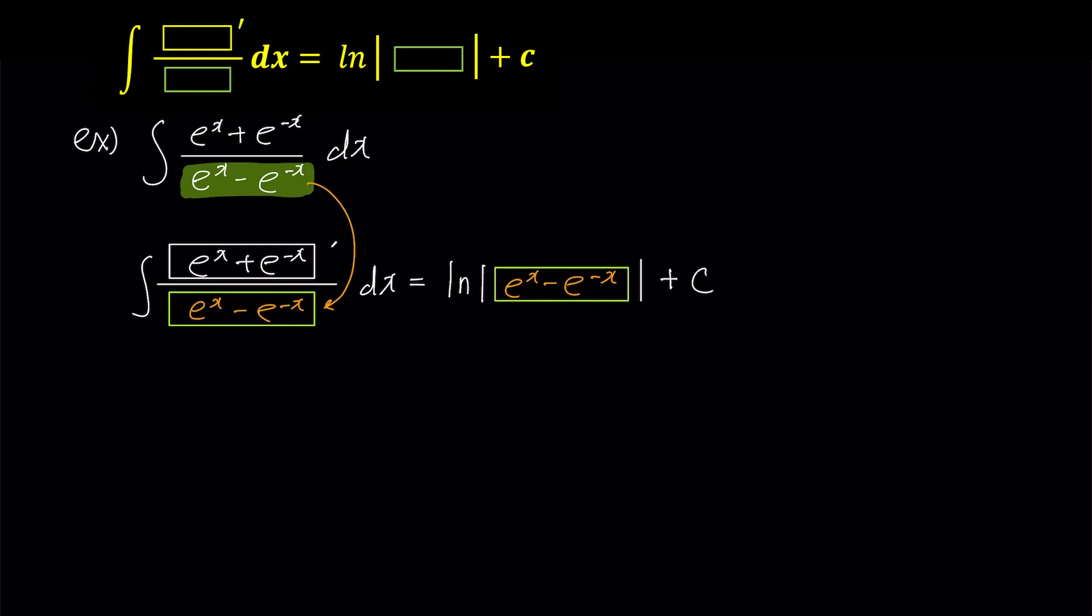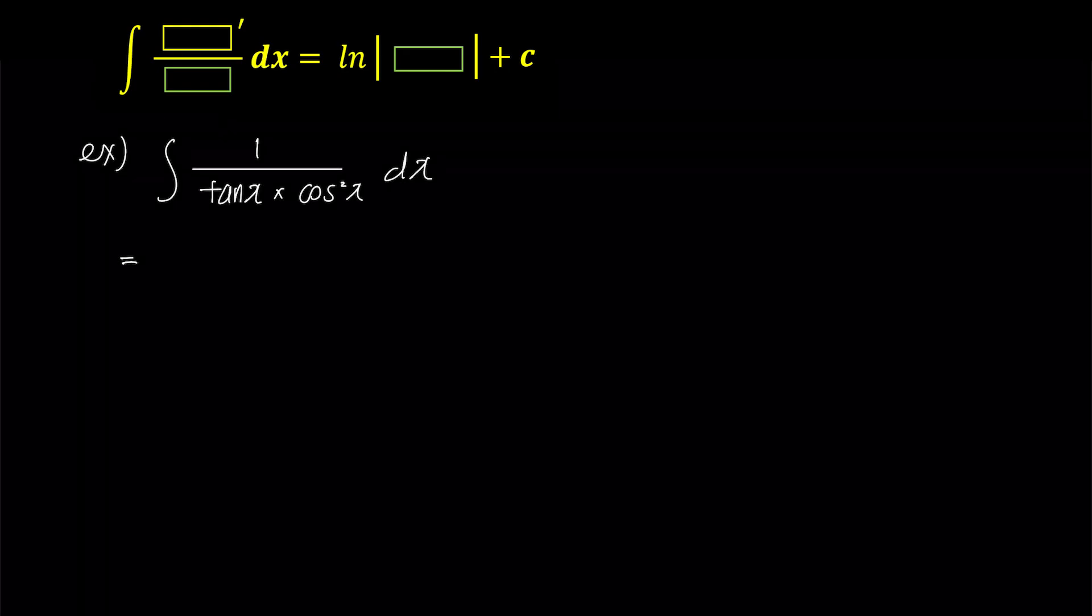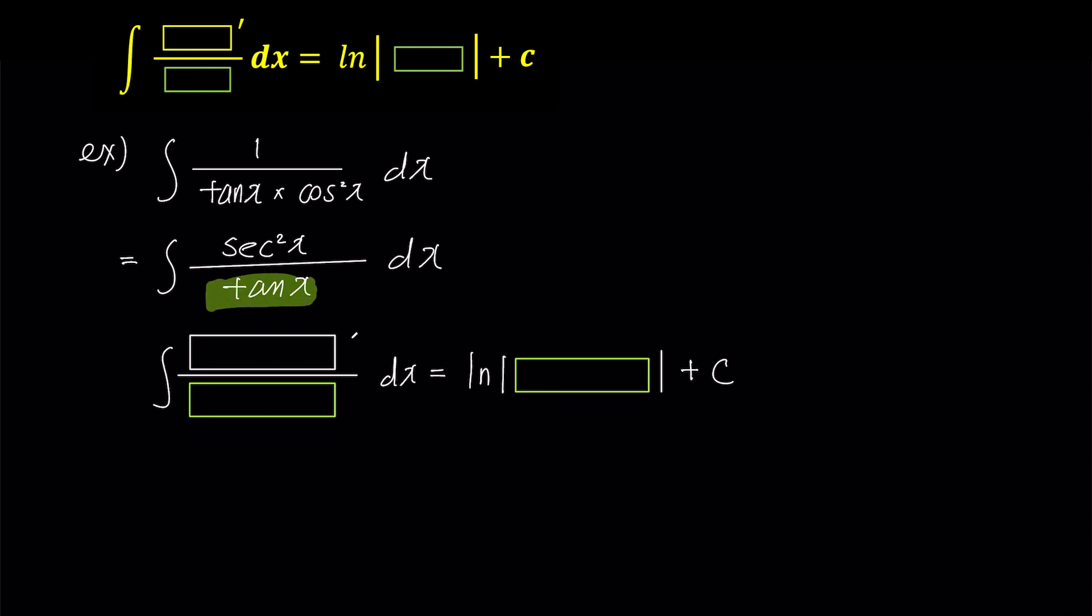In this problem, the numerator is simply 1, and the denominator contains both tangent x and cosine square x. Let's try moving cosine square x from the denominator to the numerator. As the reciprocal, 1 over cosine x is secant x, so the numerator becomes secant square x. Now let's apply the box rule and fill in the boxes. We can put tangent x in the green box and its derivative, which is secant square x, in the box prime. Finally, we can put tangent x alone in the right-hand green box to complete the calculation.